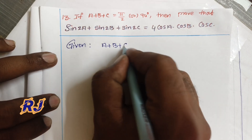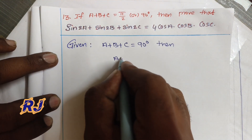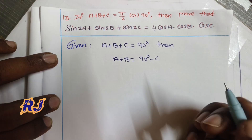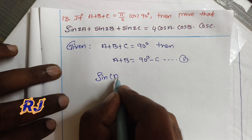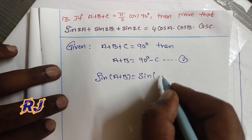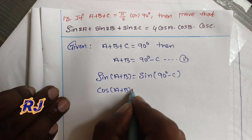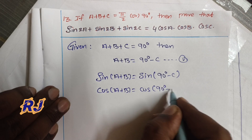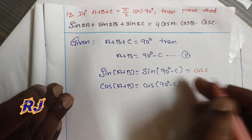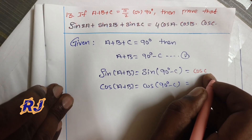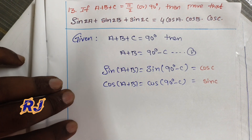Given: a plus b plus c equals 90 degrees. Therefore, a plus b equals 90 minus c. Applying sin to both sides, sin(a+b) equals sin(90 minus c), which gives cos c. So sin(a+b) equals cos c, and similarly cos(a+b) equals sin c. These are equation one.